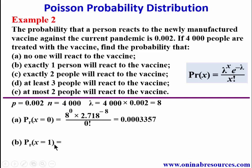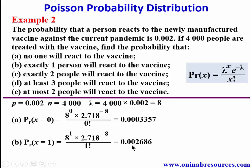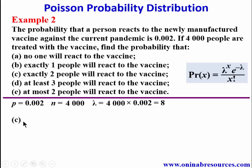For part (b), exactly one person will react, so x = 1. Substituting into the formula: P(X=1) = 8¹ × 2.718^(−8) / 1!. Simplifying gives 0.002686, which represents the probability that exactly one person will react to the vaccine.